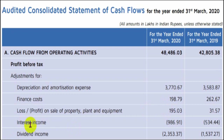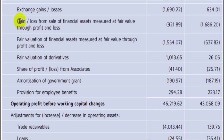Interest income of 9.8 crores is not of operating nature — it comes from investments — so it is removed from the profit before tax. Dividend income of around 23 crores received in 2020 is also not of operating nature and is removed. Foreign exchange gain of around 16 crores and gain from sale of financial assets of about 9 crores are also removed as they are non-operating.